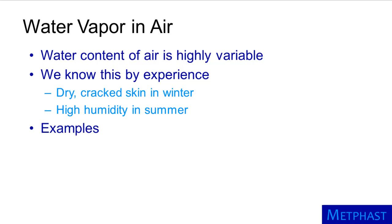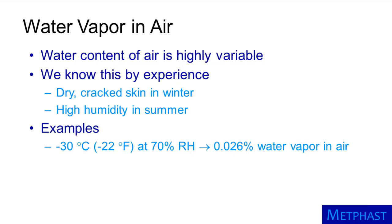Let's take a look at some examples of the amount of water vapor in the air on a percentage basis in some different atmospheric conditions. Our first set of conditions is a temperature of minus 30 degrees Celsius (minus 22 degrees Fahrenheit) at 70% relative humidity. Relative humidity is the amount of water vapor present in air expressed as a percent of the amount that would saturate the air — the point at which dew would begin to form — at the same temperature. So, at minus 30 degrees Celsius and 70% relative humidity, water vapor would make up less than 0.03% of the air. This is less than the amount of carbon dioxide that would be present. This situation occurs regularly in northern Minnesota, for example, during the middle of winter.